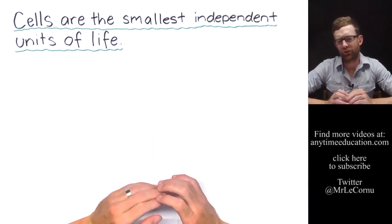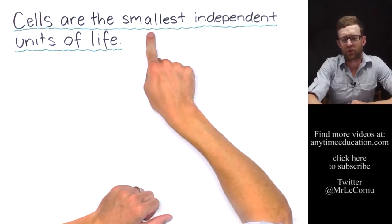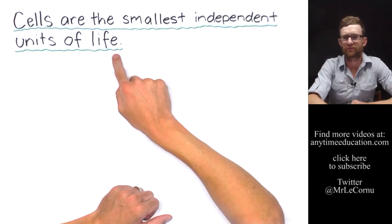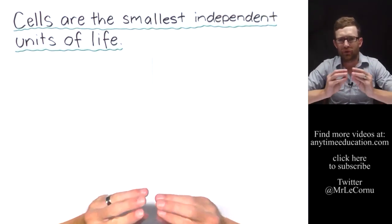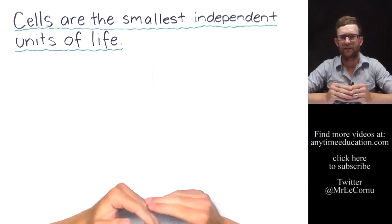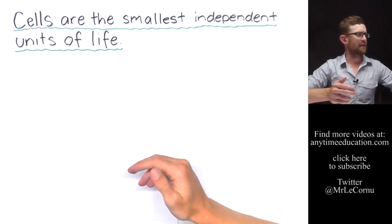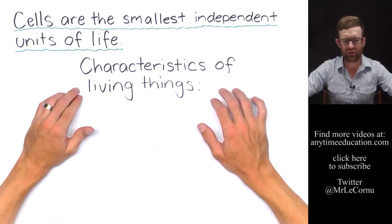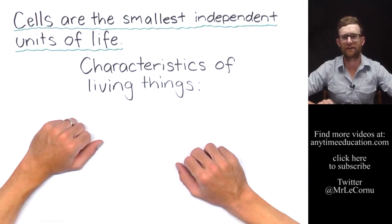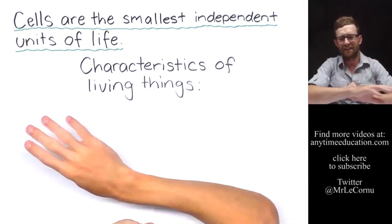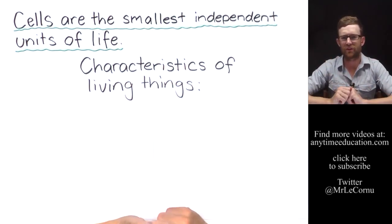Cells are referred to as the smallest independent units of life. That means they are the smallest possible thing that can be classified as living. To be classified as living, it needs to meet all of the characteristics of living things. I'm going to show you six characteristics of living things, and cells are the smallest unit of life that can meet all six of those characteristics.